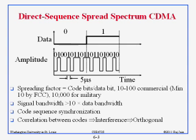CDMA was invented by Qualcomm, and that's how they made their billions. Today, every cell phone using 3G uses CDMA — everything that is 3G uses CDMA. So all of you use 3G; all of you use CDMA. It is not used in 4G, and it is not used in 2G, but in 3G, everything is CDMA.